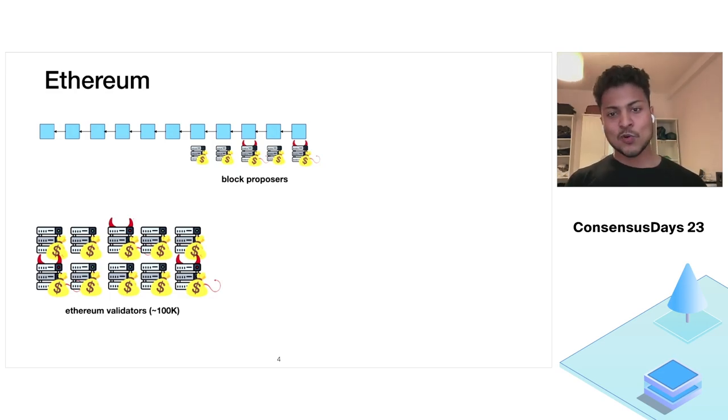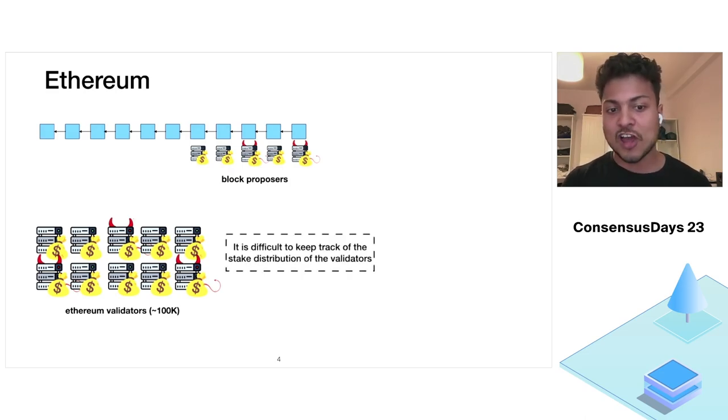If you think about any client who wants to verify a certain block, he needs to know the block proposer for that particular slot. And to know the block proposer, he needs to know the stake distribution table of the validators and the randomness used to select the validators from the stakes. Currently, Ethereum has over 100,000 validators and the stakes of each validator is also continuously changing. So it is not possible for a client to efficiently keep track of the stake distribution table.